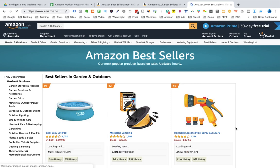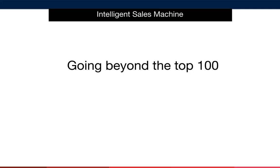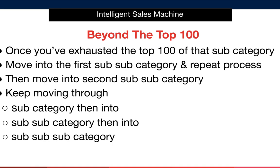Now let's look at moving our research outside the top 100. The items in the top 100 are very competitive. The hidden gems we'll find and end up selling will likely sit outside the top 100. Once you've exhausted the first top 100 bestseller list, the process is simple: move into a subcategory, locate the top 100 bestsellers there, and repeat the exact same process. Then move into the second subcategory and repeat until you're finding items that are outside our BSR limits.